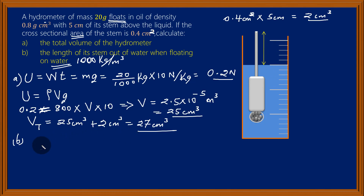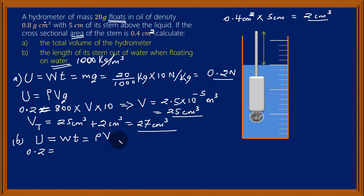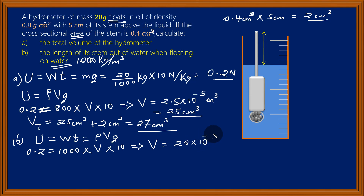We can confirm that as soon as we calculate the volume of water displaced. Again, the upthrust must equal the weight of the hydrometer — 0.2 newtons. Upthrust equals the density of water times the volume of the hydrometer immersed times the gravitational field strength: 0.2 = 1,000 × V × 10. This shows that the volume of water displaced will be 20 × 10⁻⁶ meters cubed, which means this equals 20 centimeters cubed.